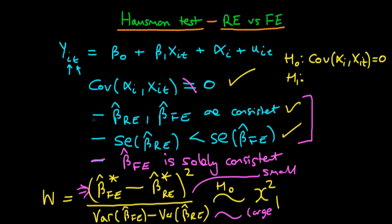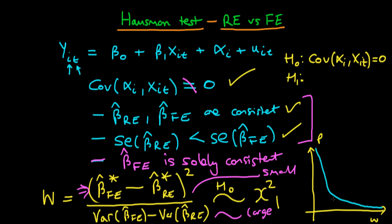To understand why this matters, consider what a chi-squared distribution with one degree of freedom looks like. On the y-axis is the probability and on the x-axis is the value of W. The overwhelming majority of values of W should be very close to zero. So if we get a value of W that is close to zero, it is quite likely we would have obtained that value if the null hypothesis were true.